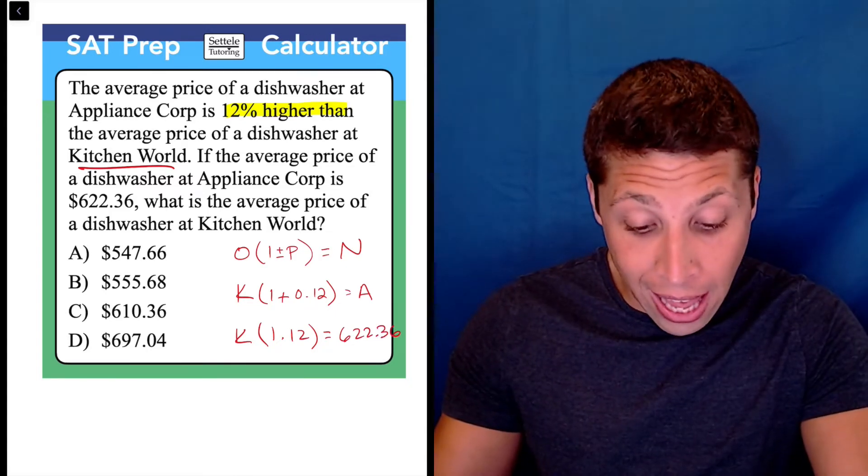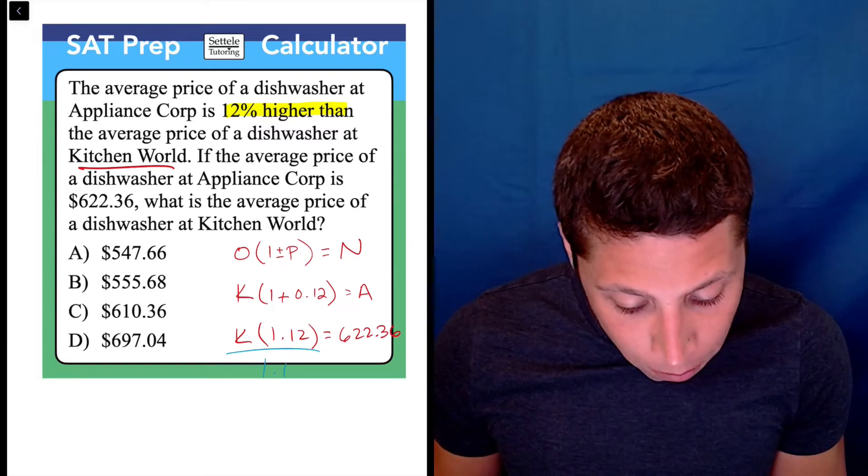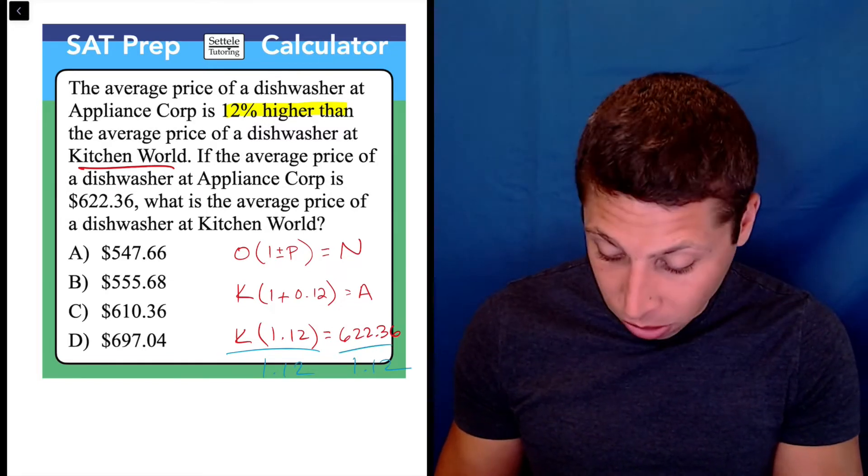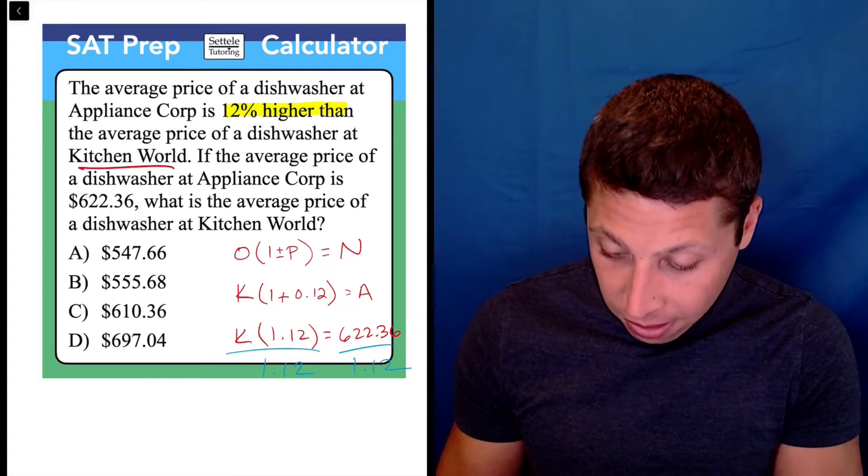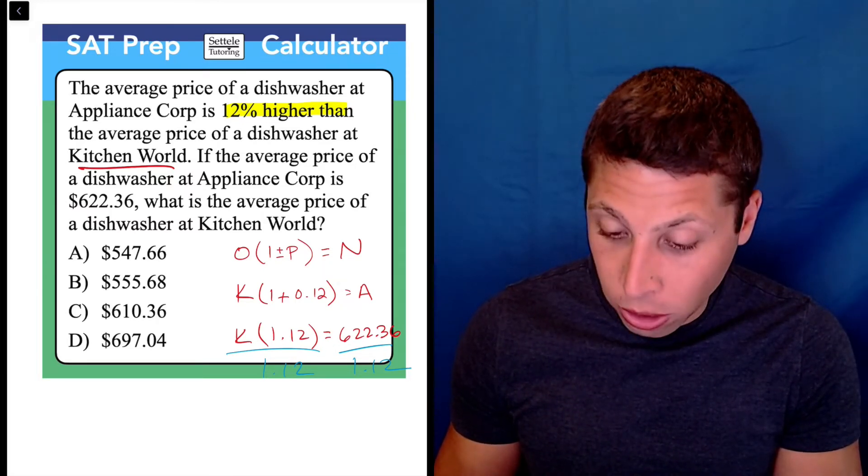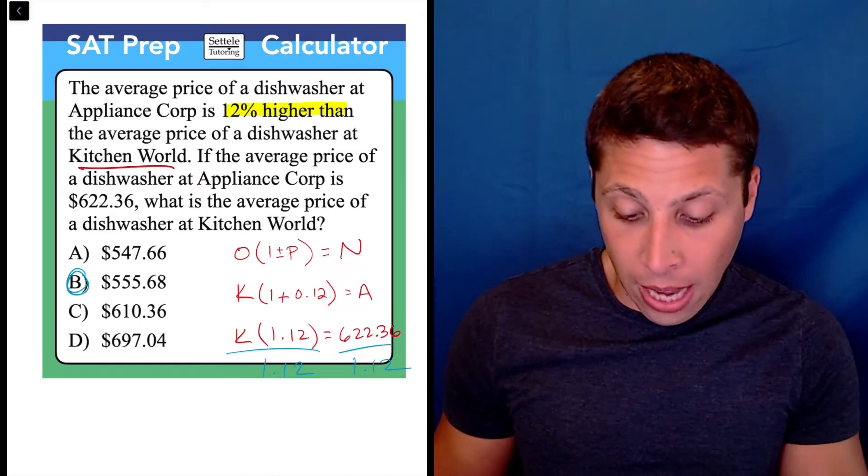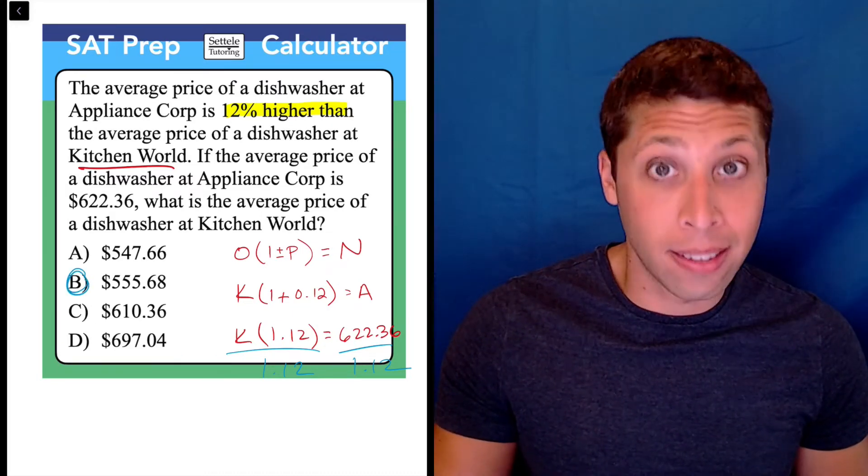So to solve for K, we're going to end up dividing both sides by 1.12, and we thankfully have a calculator, so 622.36 divided by 1.12 gets us 555.68, and that is choice B, and that is the correct answer.